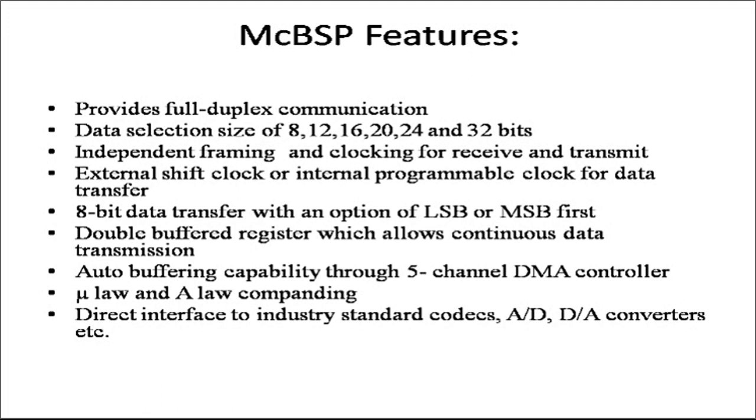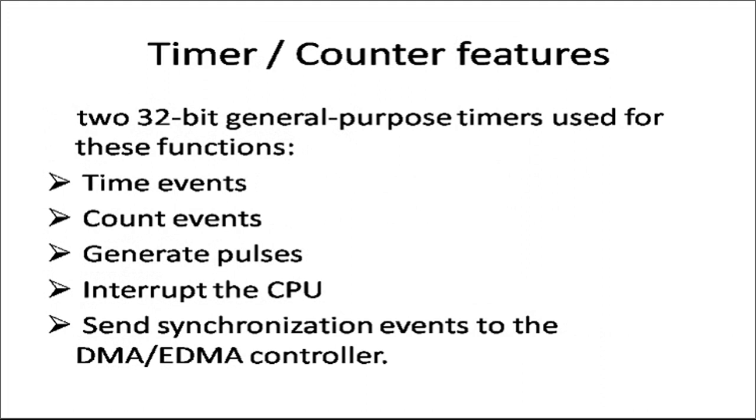Next we will talk about timer and counter feature. It is already covered in the block diagram also, we are just revising these things. There are two 32-bit general purpose timers used for these functions: to give time pulses for particular events, count external events which are occurring, generate pulses and interrupt the CPU, send synchronization events to the DMA and EDMA controller. These are some of the features of timer and counter. As you all know, timers and counters are used to generate delays also, but it is not intended to do in the DSP processor.